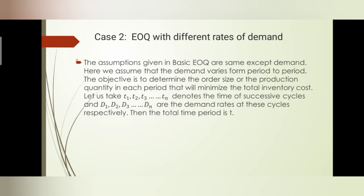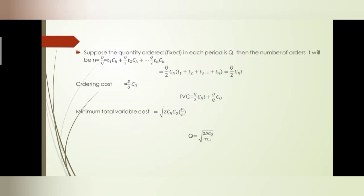We have periods t1, t2, t3. We will use demand where demand is not a constant — it varies across t1, t2, t3 with corresponding demands d1, d2, d3. Total time T is not a change. T will be given by D divided by Q, where the number of orders is D divided by Q.